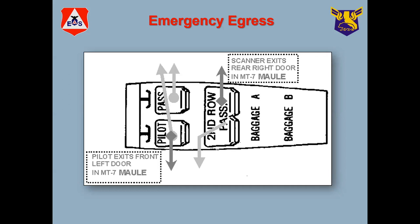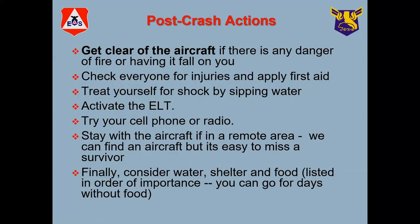For aircraft like a Cessna 172 or 182, ignore the arrows with the diamonds at the end — those are not for the aircraft we fly. Basically the co-pilot runs the seat all the way back, the two front-seat occupants exit the right side, and the two rear-seat occupants go out the left side.